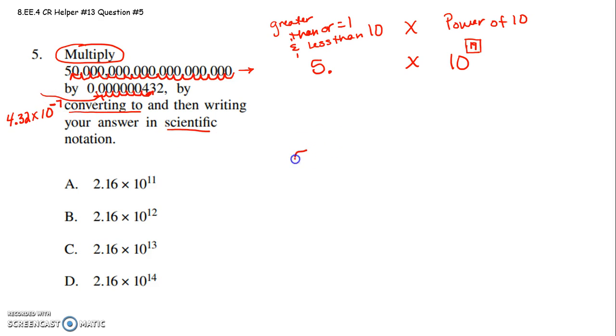So now we have 5 times 10 to the 19th multiplied by 4.32 times 10 to the negative 7th. The first thing we have to do is multiply 5 by 4.32. I would quickly at this point do 4 times 5 is 20, so my answer has to be somewhere around 20.